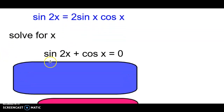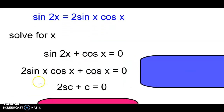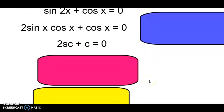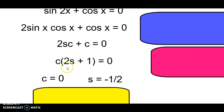We substitute 2 sine cosine in for sine 2x. Bring down the rest of the equation, rewriting it using just the letters. Now we use algebra to solve for two trig functions. We can factor out c (cosine) from both terms, leaving us with c times (2s + 1). So cosine could equal 0, or 2s + 1 = 0, meaning sine equals negative one-half.